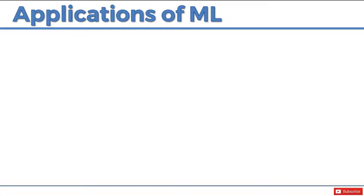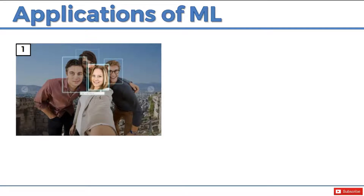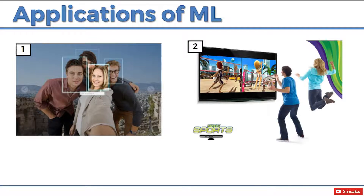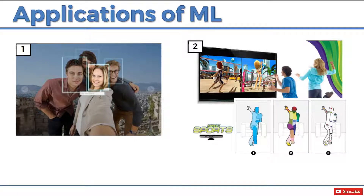Machine learning applications. Number one: Facebook facial recognition. Everybody knows this — when you upload a photo, Facebook somehow knows already who your friends are and tags them automatically. That's a machine learning algorithm in action. There's also a device called Kinect — you can still buy it. It looks at your actions so you don't have to have a joystick to play games on your Xbox, and it uses a machine learning algorithm called Random Forest, which we'll discuss in great detail inside this class.